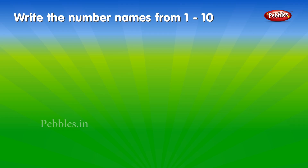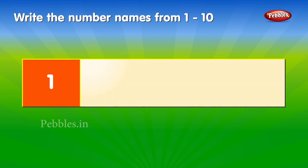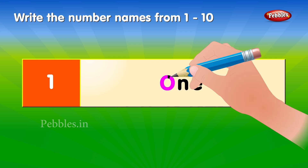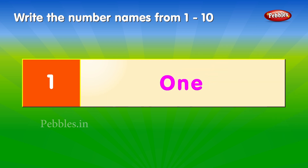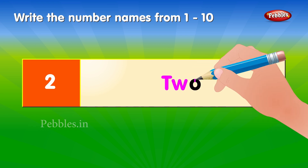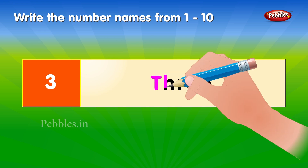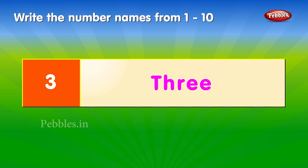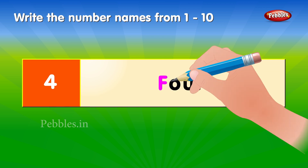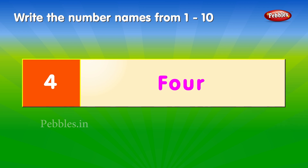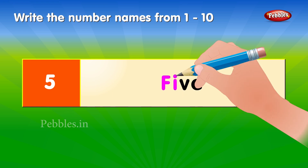Write the number names from 1 to 10. 1: O-N-E. 2: T-W-O. 3: T-H-R-E-E. 4: F-O-U-R. 5: F-I-V-E.